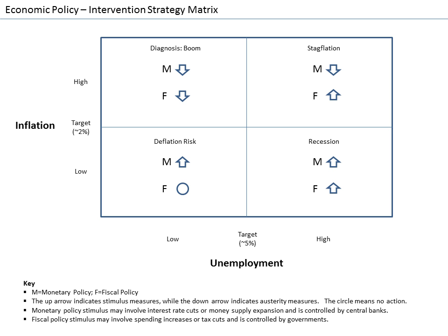Economists interested in long-run increases in output study economic growth. Advances in technology, accumulation of machinery and other capital, and better education and human capital are all factors that lead to increased economic output over time. However, output does not always increase consistently. Business cycles can cause short-term drops in output called recessions. Economists look for macroeconomic policies that prevent economies from slipping into recessions and that lead to faster long-term growth.